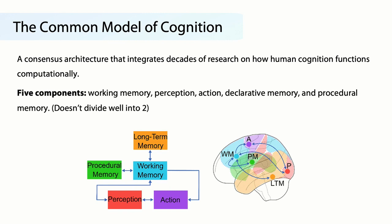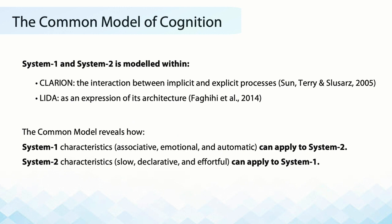The Common Model is a consensus architecture that integrates decades of research on how human cognition functions computationally. There are five components derived empirically from large-scale neuroscience and empirical research, as well as integrating the common components of different cognitive architectures. The five components are working memory, perception, action, declarative memory, and procedural memory — which doesn't align well with the two systems in the System 1 and System 2 framework, and so this requires some reckoning.